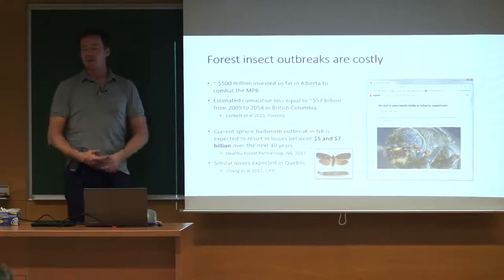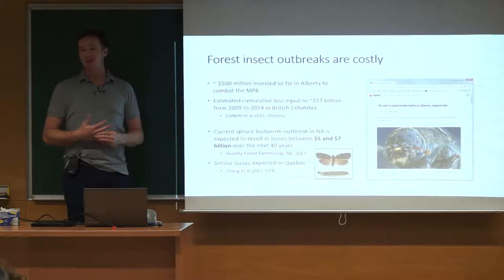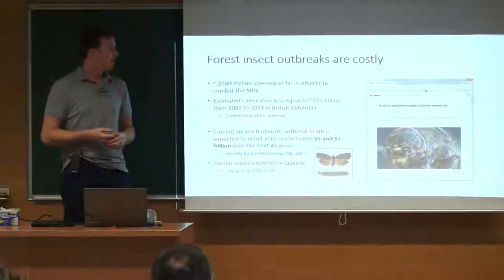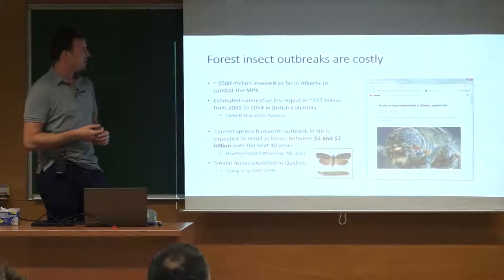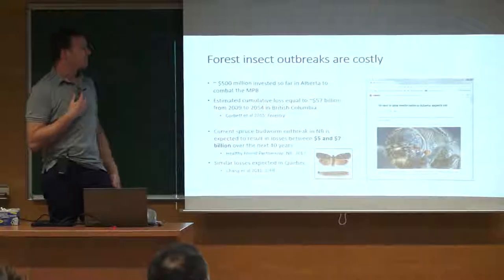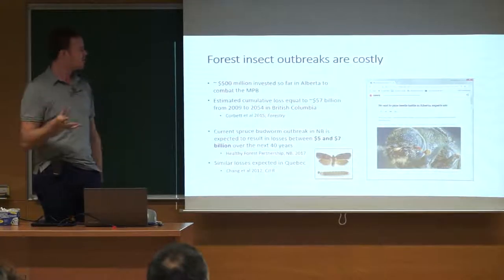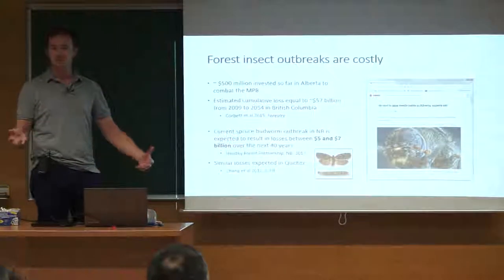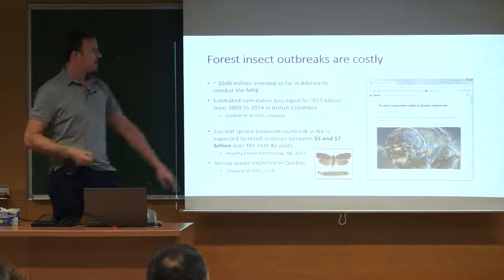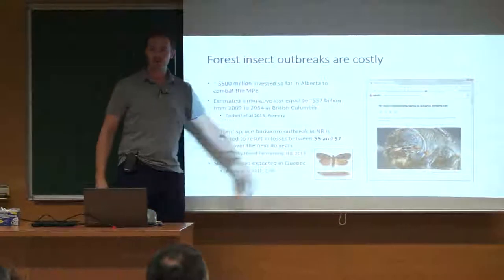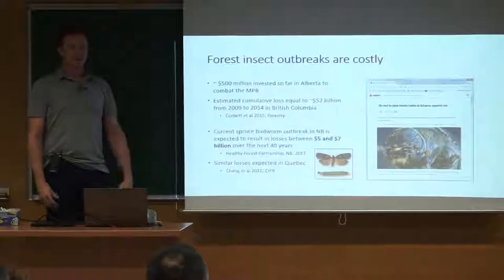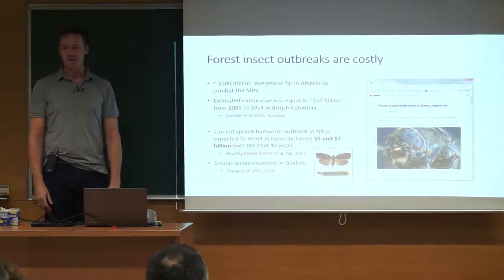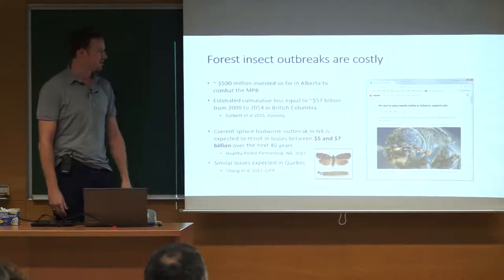The question of cost: these outbreaks are incredibly costly. The current outbreak has triggered over $500 million of direct investment from the Alberta government. The estimated cumulative loss is somewhere around $57 billion over the next 50 years in the province of British Columbia alone. British Columbia's economy is very wood dependent — this is a huge amount of money. I think the modest salaries of researchers and graduate students to address these problems are well worth it; in fact, they should be giving researchers more money.